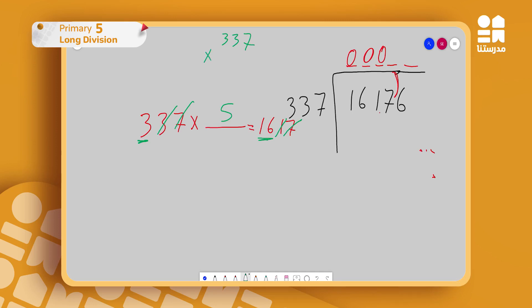16 divided by 3 equals what? Table of 3 quickly: 3 times 5 gives me 15, which is 15 with remainder 1 from 16. So I'll try 5 first. We can do it here. 337 times 5: 5 times 7 is 35, 5 and 3 is 18, 8 and I carry 1. 5 times 3 is 15 plus 1 is 16. The answer is 1685.